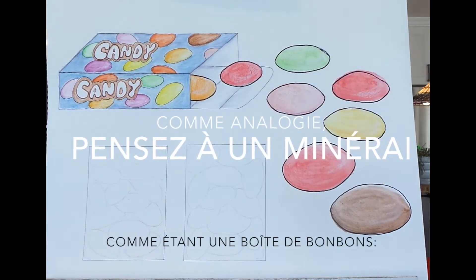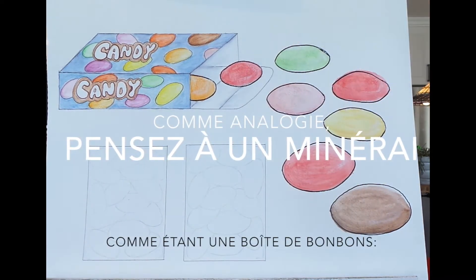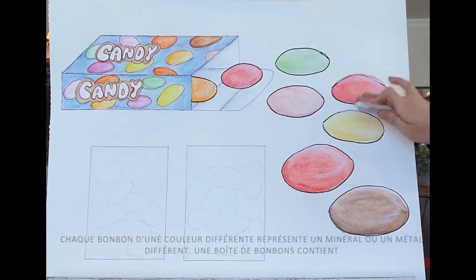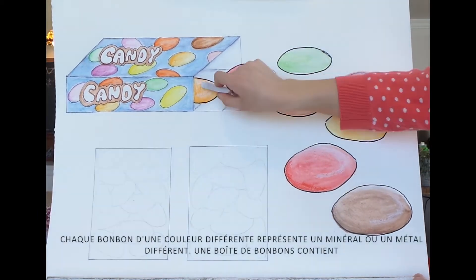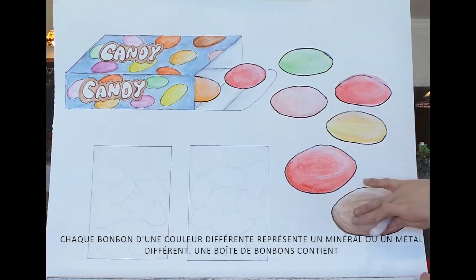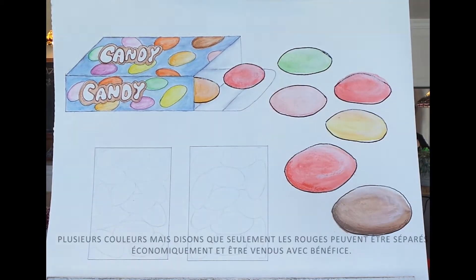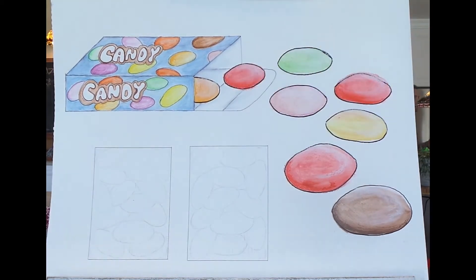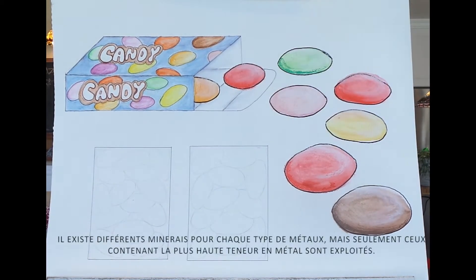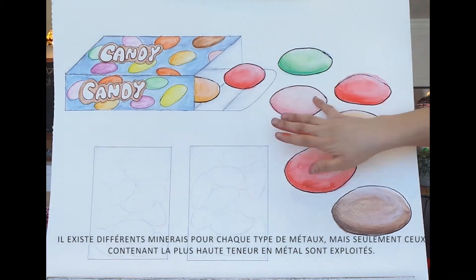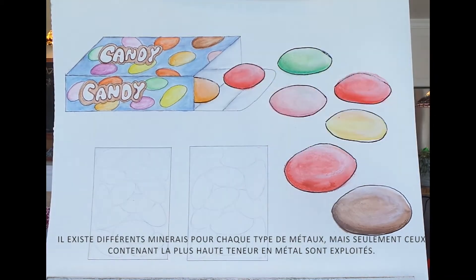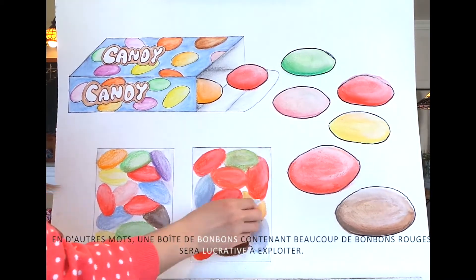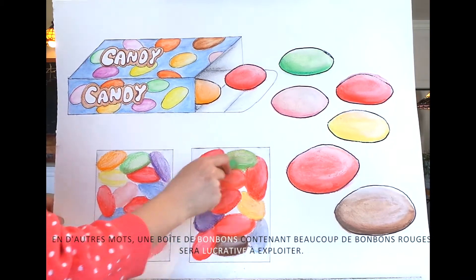An ore is a rock containing one or more useful and profitable metals. Think of an ore as a box of colored candies, where each color represents a different mineral. A box of candy contains many different colors, but perhaps only the red ones can be sold to make money. There are various ores for every profitable metal, but only an ore with a high percentage of the metal is economical. In other words, a box of candy with more red ones can make more money faster.